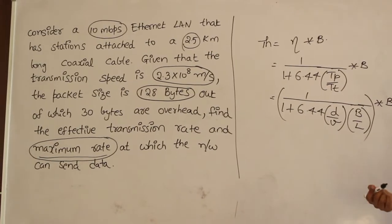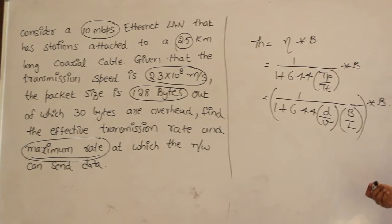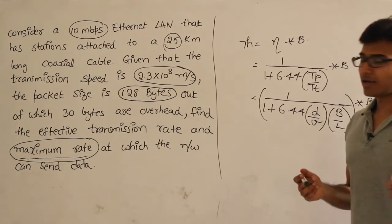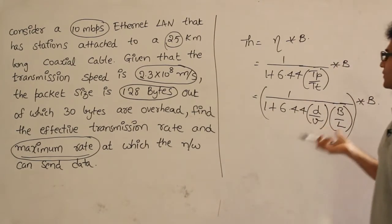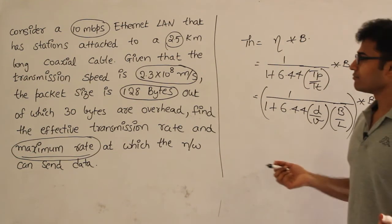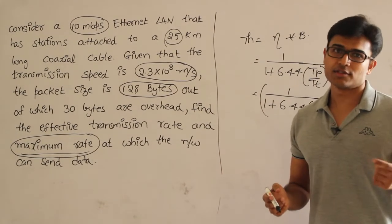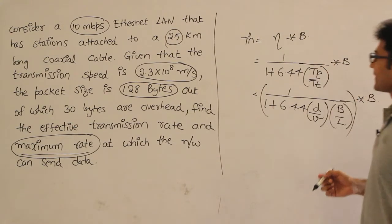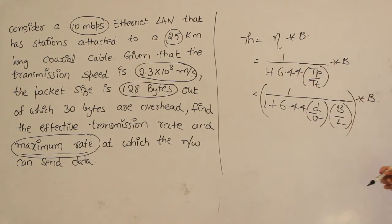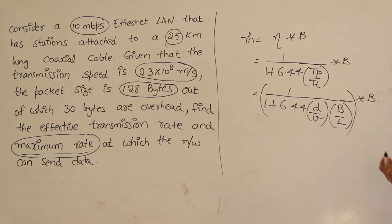Throughput is the maximum rate at which we can send data. You can work out the math by substituting these values. Just take care that when you write 128 bytes, you multiply by 8 to convert to bits, because bandwidth is given in bits per second.